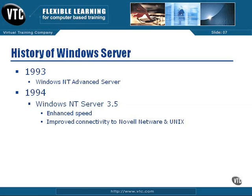NT Server 3.5 had enhanced speed and it improved connectivity to Novell Netware. Novell Netware was probably Microsoft's largest competitor in the network operating system market at this time. It also provided improved connectivity to Unix. It was very highly competitive between those three network operating systems, and Microsoft was actually kind of the newcomer into the market.